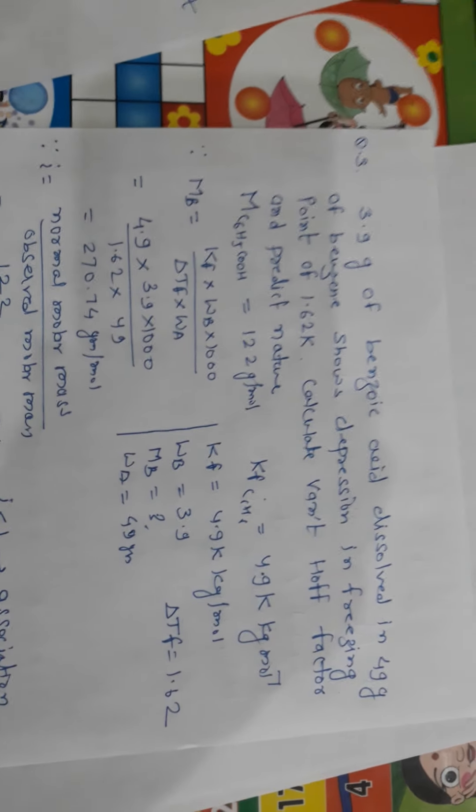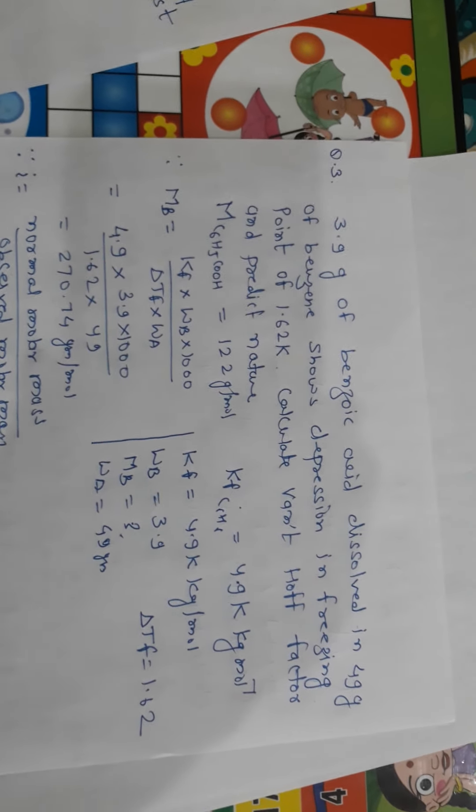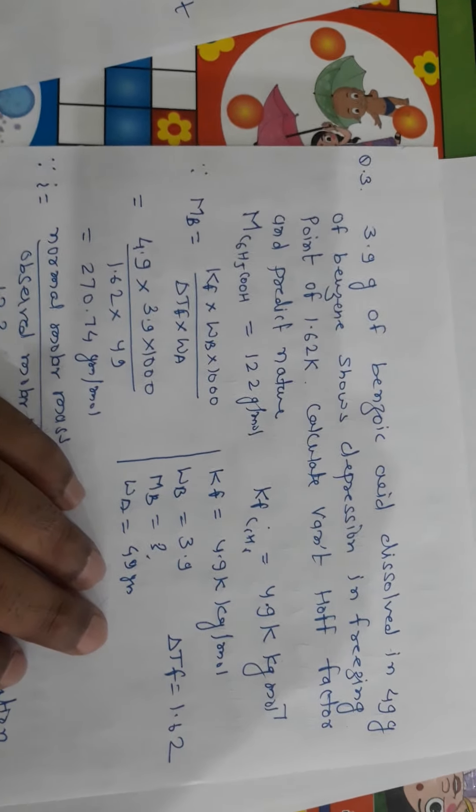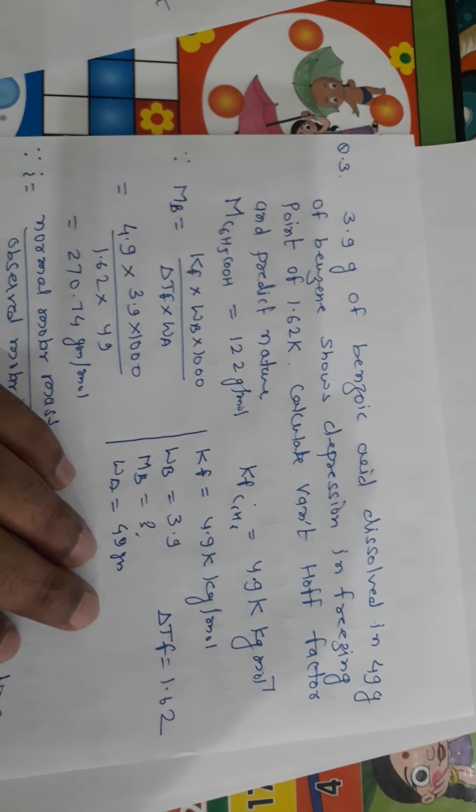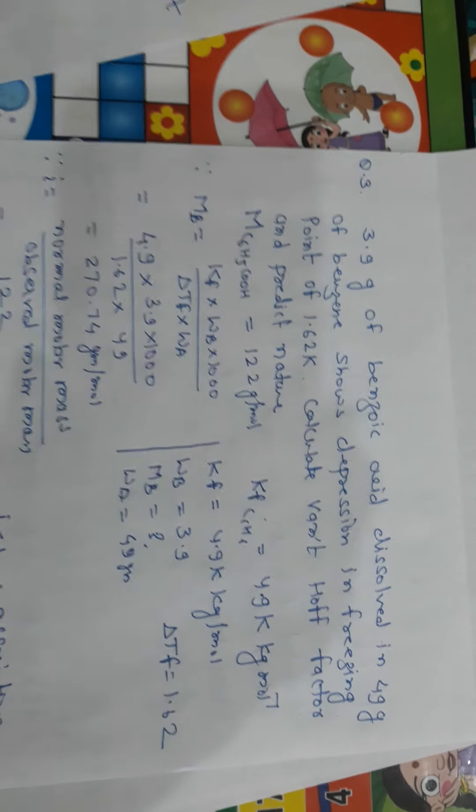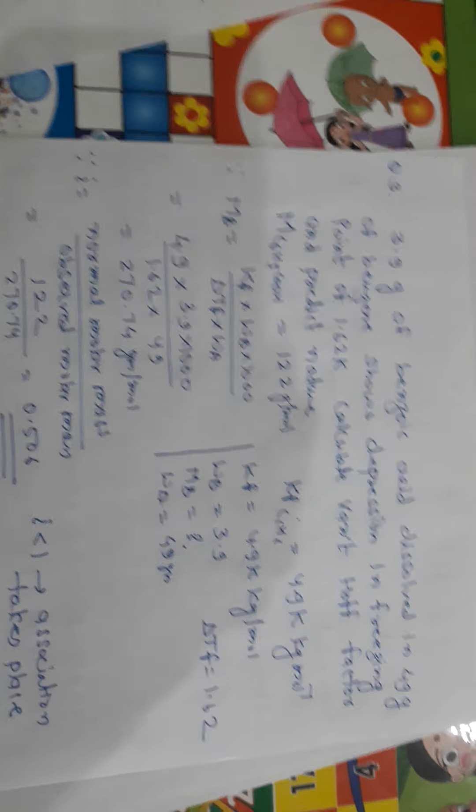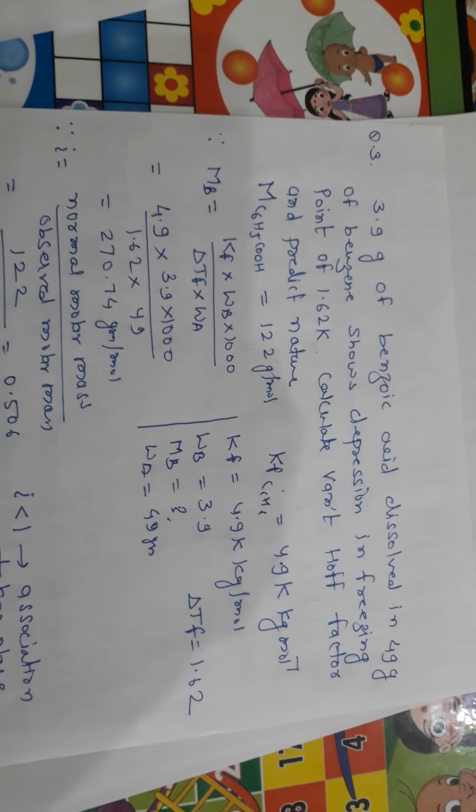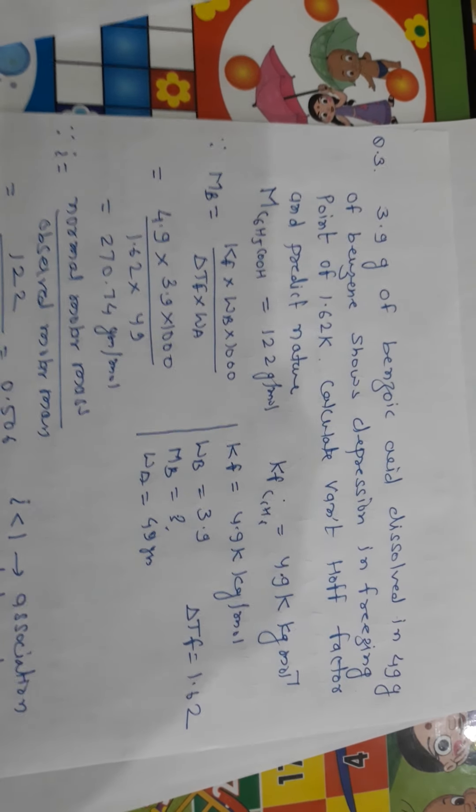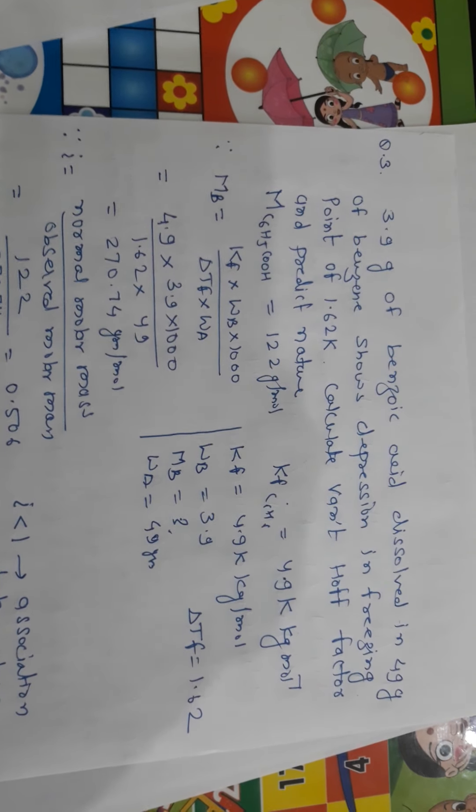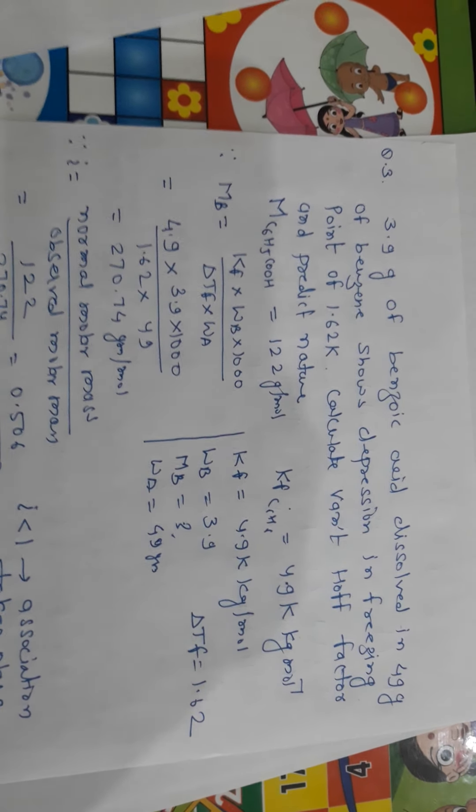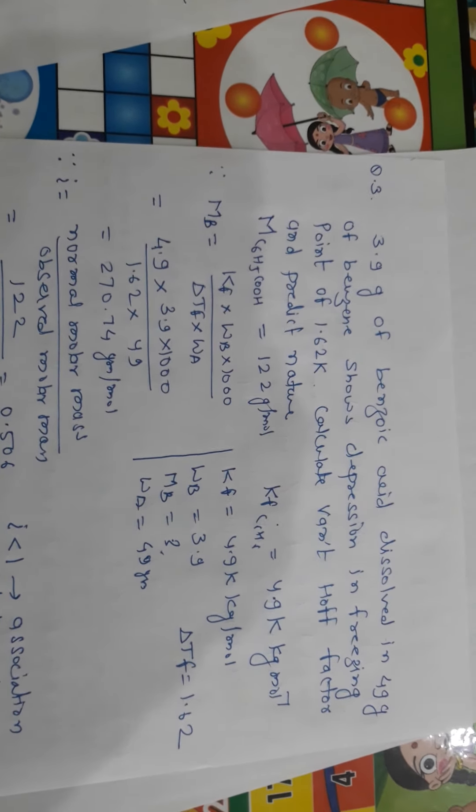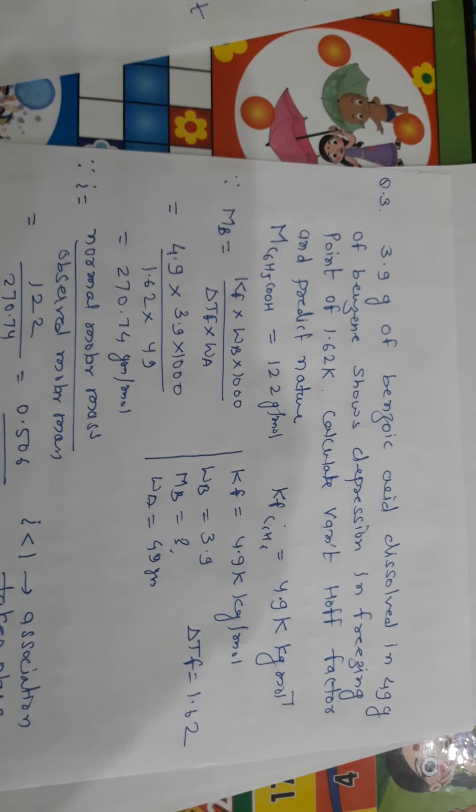Because I can be found out by using the formula normal molar mass upon observed molar mass. Normal molar mass we can find out by using the formula of benzoic acid, C6H5COOH. And observed molar mass, we will be found out by using a colligative property. Now, what are the values given? Values are given. Kf of benzene is given 4.9 Kelvin kg mole inverse. Then Wb is 3.9 gram, it is given. Mb molar mass, we have to find out using the colligative property formula. Wa 49 gram, it is given. ΔTf is equal to 1.62 gram.